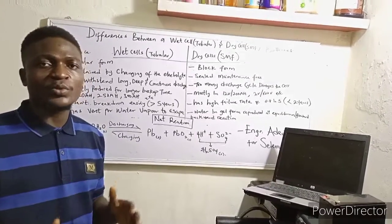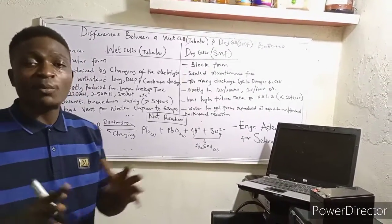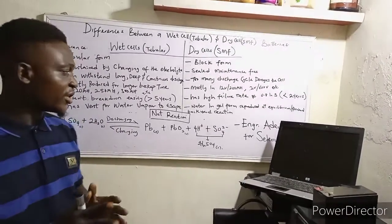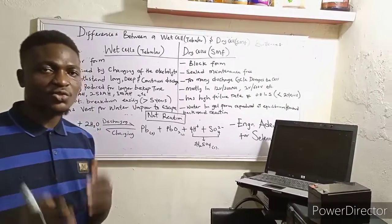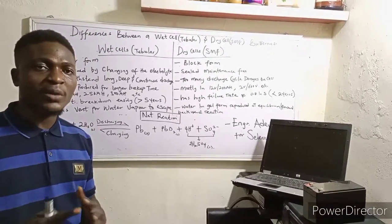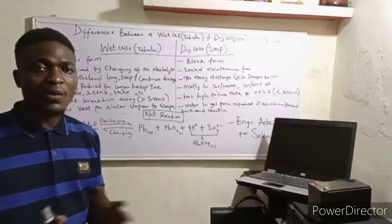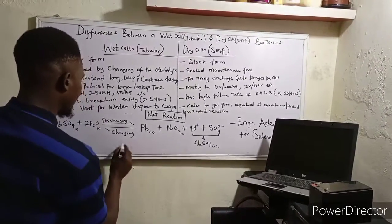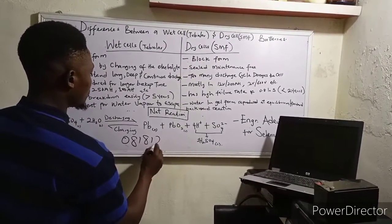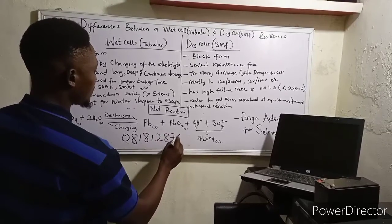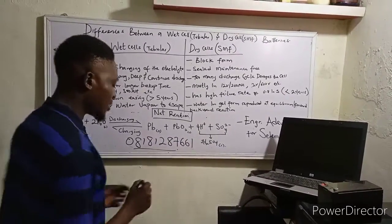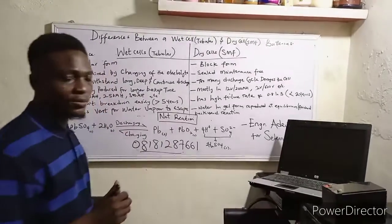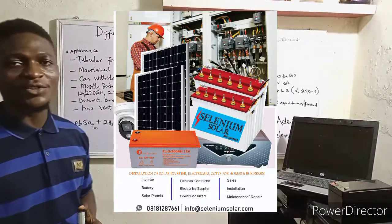And before we go, I would like you to click on the subscription button on my YouTube page and like it so that you can get more videos, more educating videos of this nature in future. Thank you very much. If you need to buy inverter, if you need solar installations to be done in your apartment, you need inverter repairs, you need power electronics, then we are the right person to call. Contact us at 0818-1287-661. That is our WhatsApp line. Or you can send an email to us at seleniumsolar@gmail.com. Thank you very much.